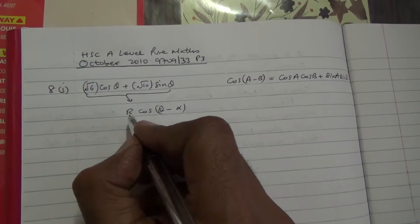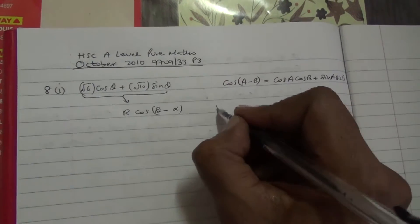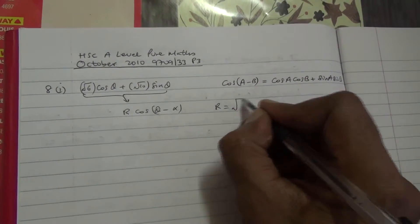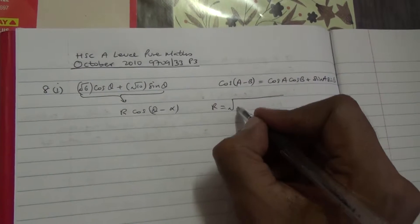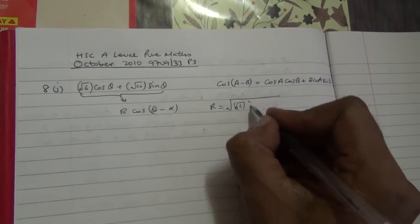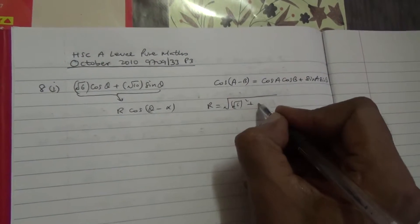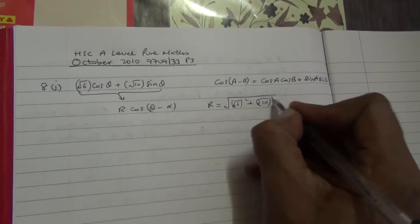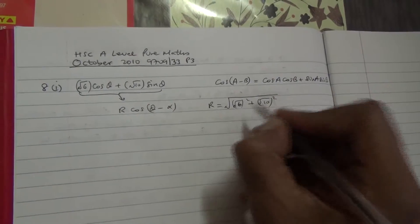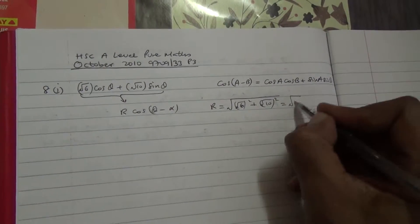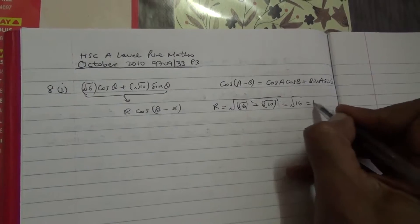First, we're going to find r. So r is equal to the root of (root of 6) squared plus (root of 10) squared, and that's going to give us root of 16, which is 4.